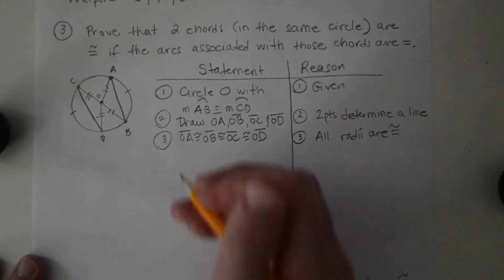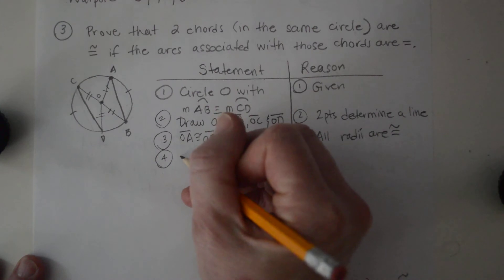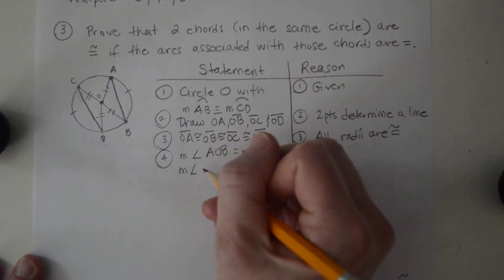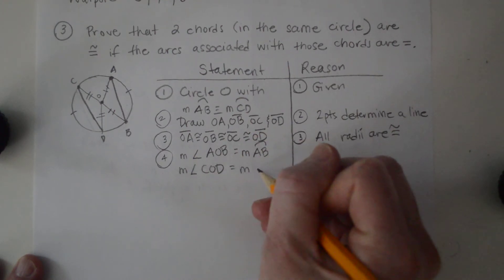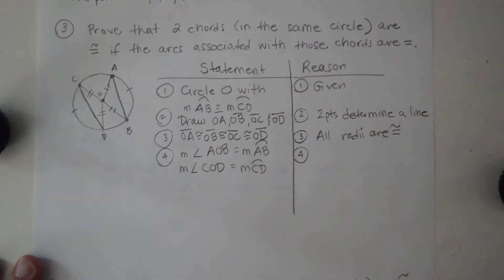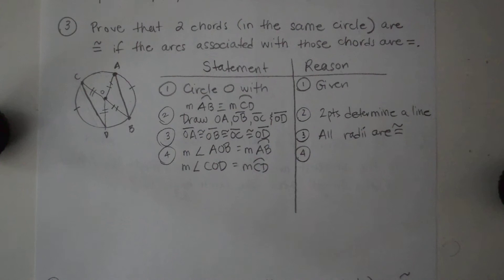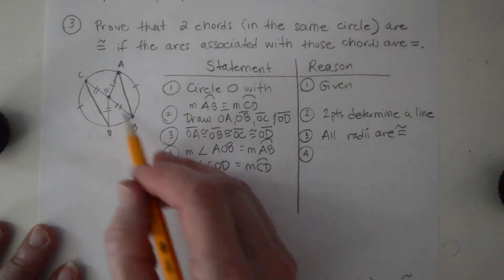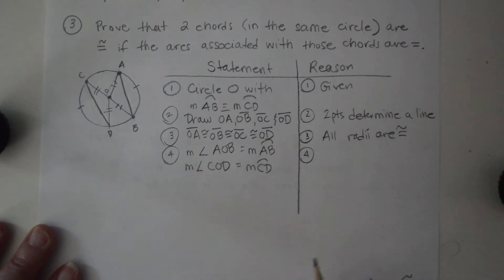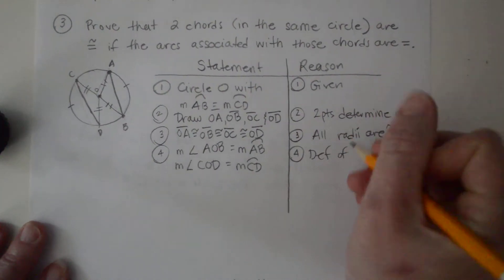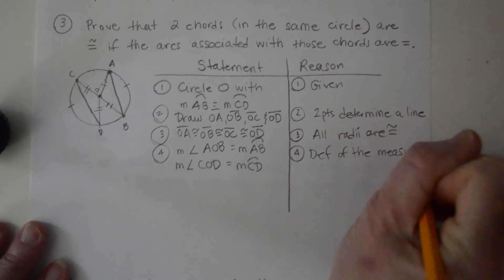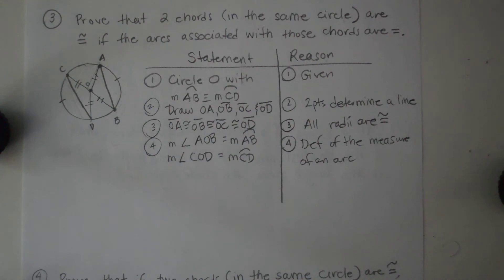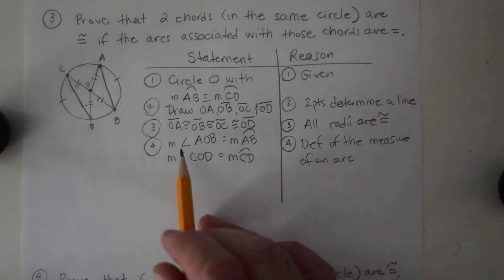Next we're going to say that the measure of angle AOB equals the measure of arc AB, and the measure of angle COD equals the measure of arc CD. As we talked about in the packet, when we have a central angle, the measure of the angle equals the measure of the arc. The reason is the definition of the measure of an arc.